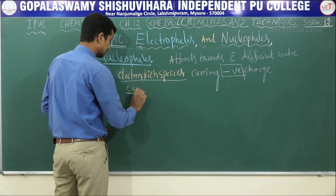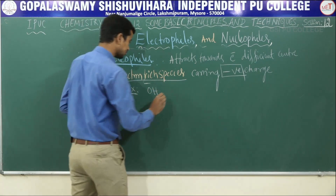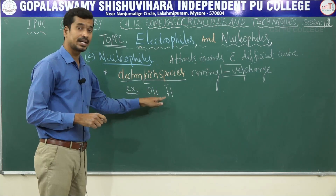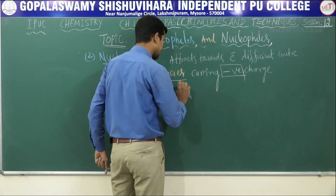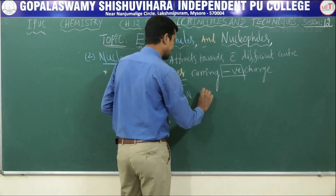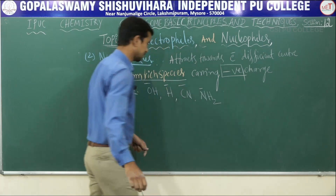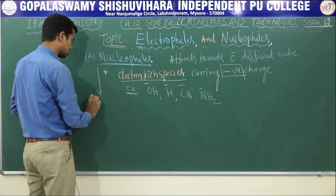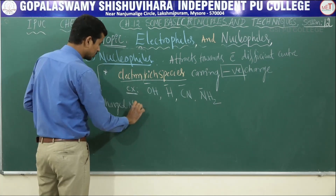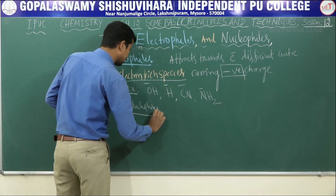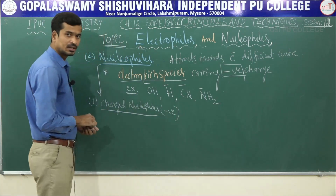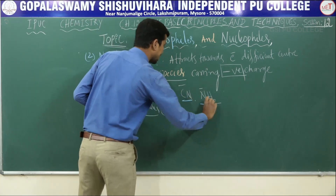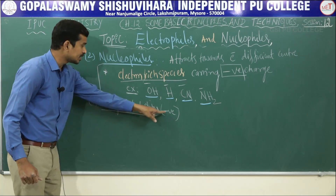Examples of nucleophiles: OH- — hydroxide, H- — hydride, CN- — cyanide, NH2- — amide. These are examples of nucleophiles. Nucleophiles are of two types. First type: charged nucleophile — meaning negatively charged nucleophile. Examples: OH-, H-, CN-, and NH2-. These are examples of negatively charged nucleophiles.